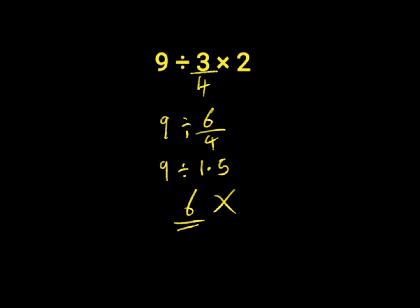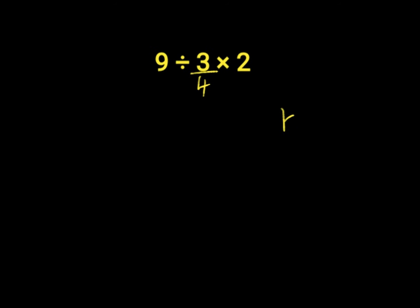Let's find the right answer to this question. First of all, we solve our division, which is 9 divided by 3 over 4, using KCF. K stands for keep, C stands for change, and F stands for flip. We are going to keep 9, change division to multiplication, and flip 3 over 4 to 4 over 3. Then multiply by 2.